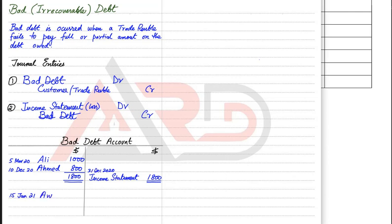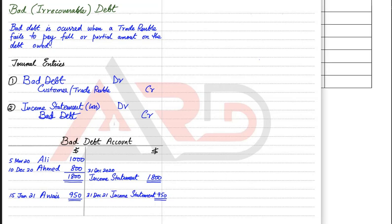In 2021, a customer named Awes turned bad, owing 950. The entry: debit bad debt account, credit Awes's account. With only one bad customer this year, we again close the bad debt account and transfer it to the income statement. Importantly, a bad debt account never has a balance brought down or balance carried down. At year-end, the entire balance must be transferred to the income statement — it is never carried forward.